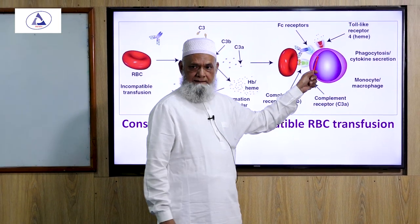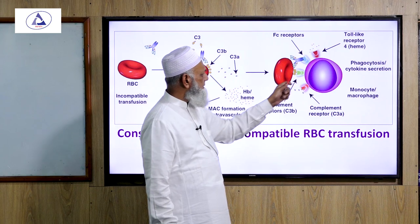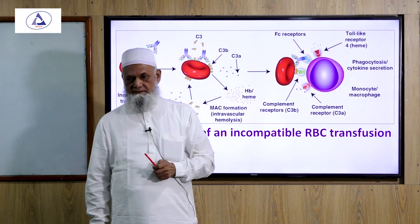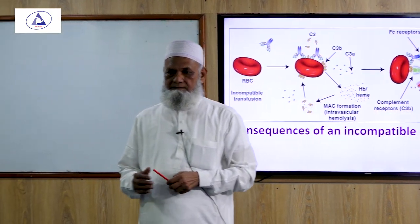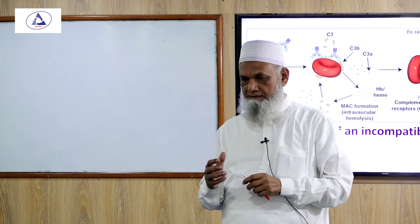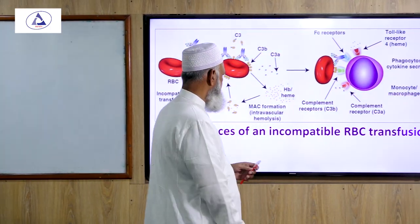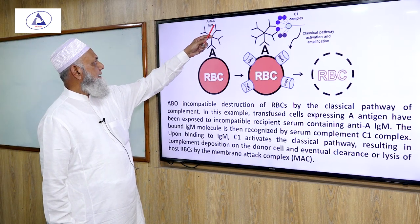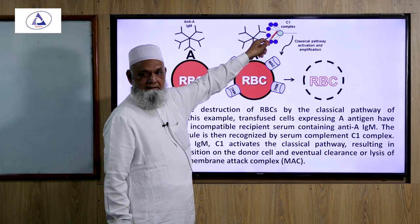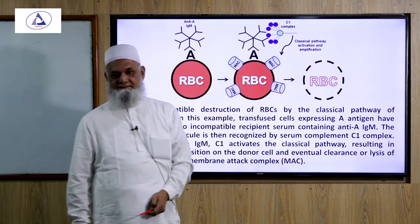Extravascular hemolysis occurs when antibody-coated red cells pass through the spleen or liver. The mononuclear phagocyte system (MPS) of these organs engulfs and destroys these red cells. In summary: intravascular hemolysis is due to activation of the complement system and MAC formation; extravascular hemolysis occurs when the complex passes through the liver or spleen and is engulfed by the MPS. The process involves antigen A binding NTA immunoglobulin, complement activation, MAC formation, and lysis of the RBC.